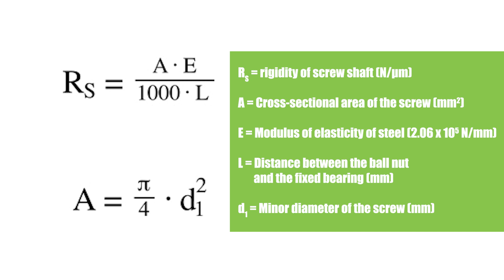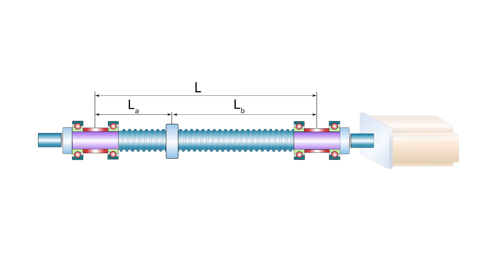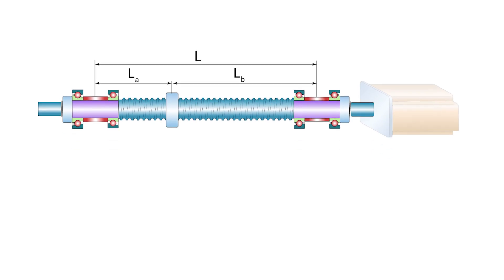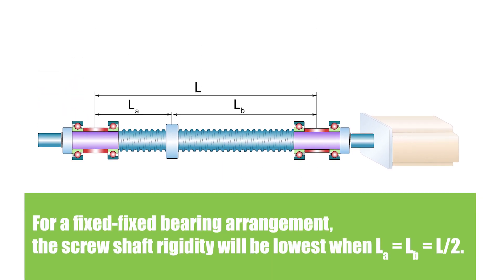When the ball screw assembly has two fixed ends, known as a fixed-fixed bearing arrangement, the rigidity of the screw shaft takes into account the distance of the ball nut from each of the fixed bearings. In the fixed-fixed arrangement, the rigidity will be lowest when the ball nut is located halfway between the two fixed ends. In the image shown here, L sub A and L sub B would be equal.